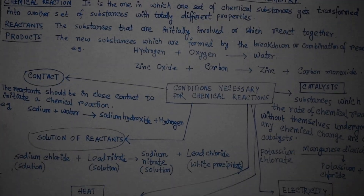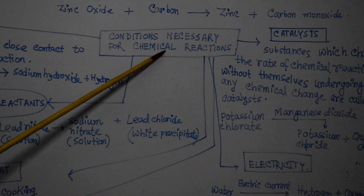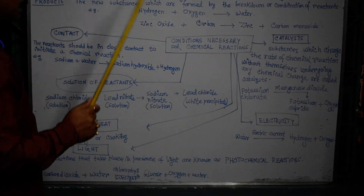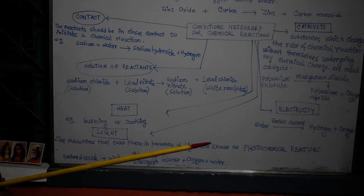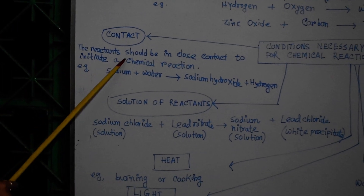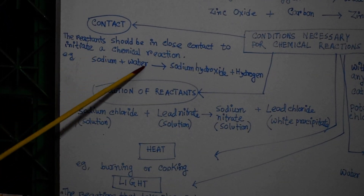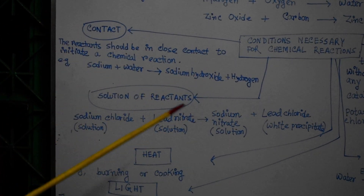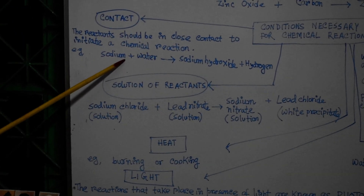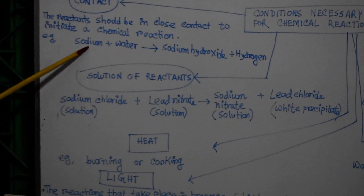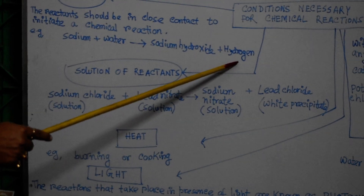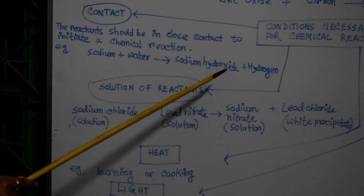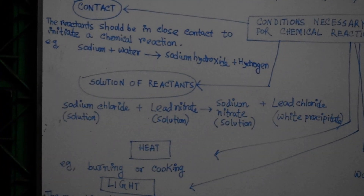There are several conditions which are necessary for chemical reactions. We are going to discuss six essential conditions. The first is contact — reactants must be in close contact to initiate a chemical reaction. For example, sodium reacts with water to directly produce sodium hydroxide and hydrogen; contact between sodium and water is required.